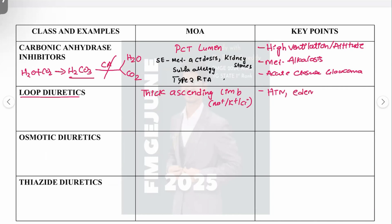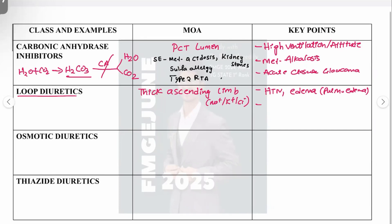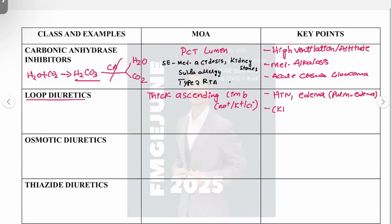Loop diuretics are used in hypertension and edema patients. They are the best drug of choice for pulmonary edema, nephrotic syndrome, edema due to liver failure, and heart failure. They can also be used in chronic kidney disease (CKD) patients — even at GFR less than 40, they remain the drug of choice.